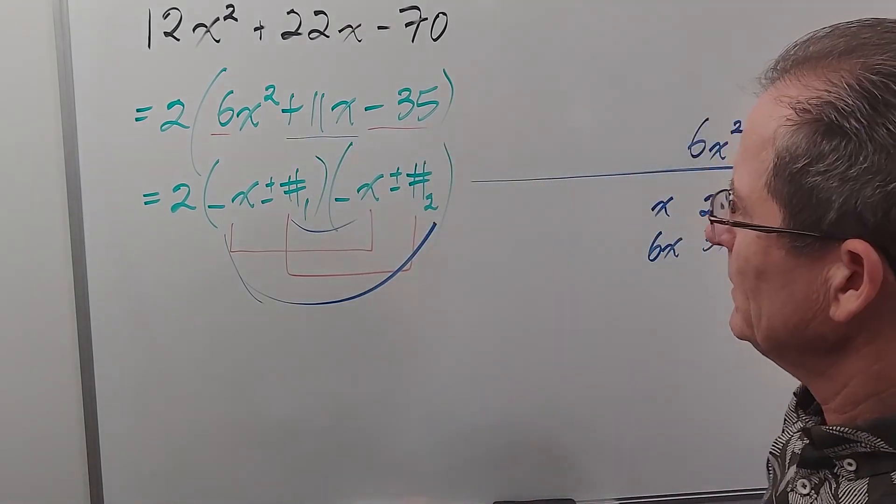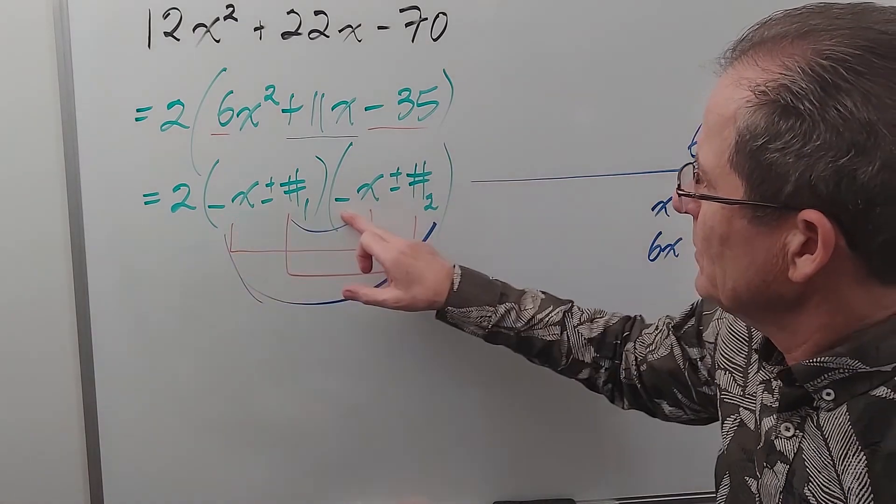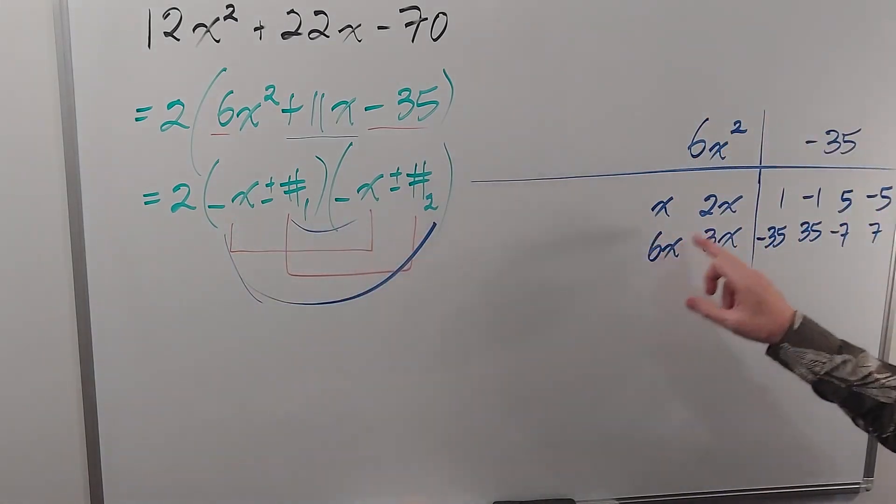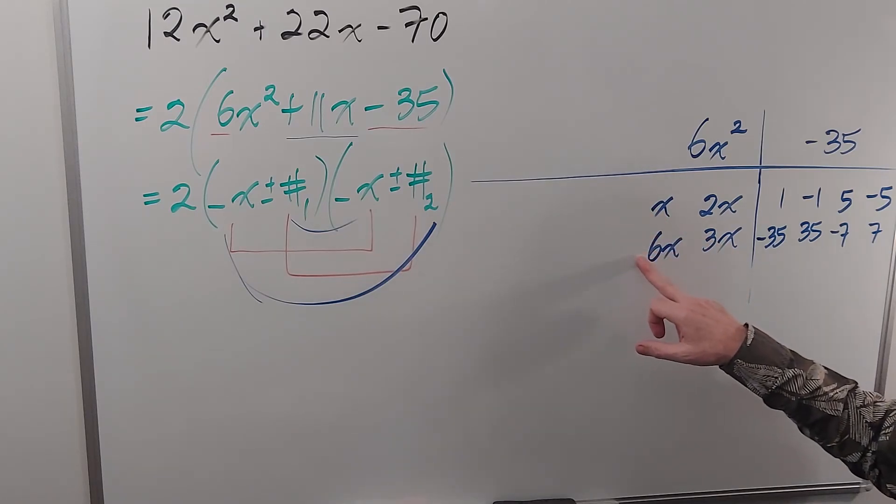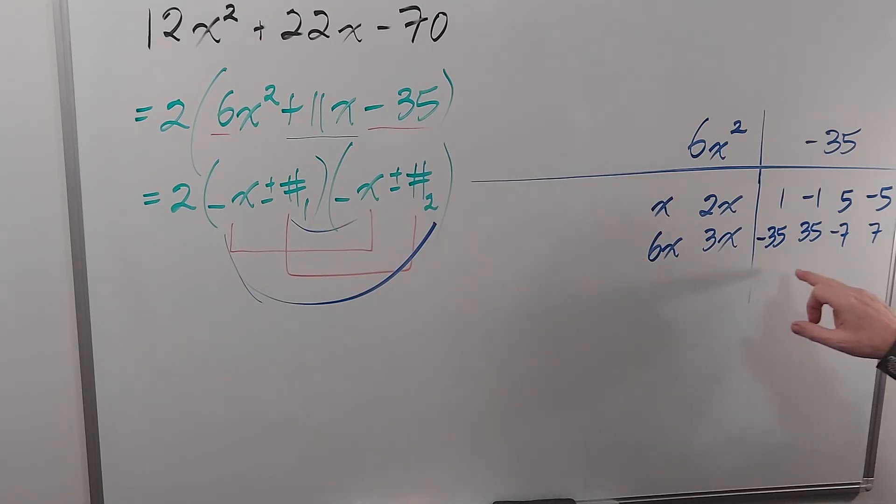So what are the possibilities? Well these numbers could be x and 6x or 2x and 3x. You might think they could both be negative but it turns out the negative will factor out in the end so we won't get a different answer. And over here we've got four possibilities: 1 and negative 35, negative 1 and 35, 5 and negative 7, and negative 5 and 7.